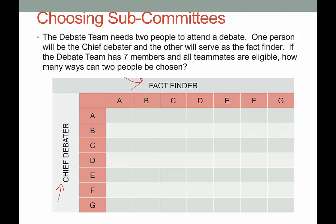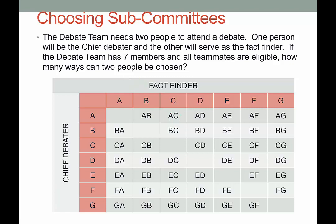Now, if there's something that doesn't make sense right off the bat — Anna cannot be both the chief debater and the fact finder, so we just leave that cell blank. We go to the next one, we put AB, indicating Anna is the chief debater and Bob is the fact finder. AC means Anna is the chief debater and Christopher is the fact finder, and so on and so forth. There's the completed table. You can see here all the different possibilities. You'll notice that the diagonal is left blank because that's where the name repeats, so we don't put anything there because that wouldn't make sense in the context of the problem.